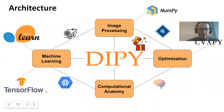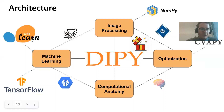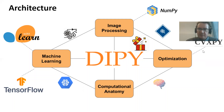Here is the architecture of the software in the grand picture. DiPy has an image processing site and a signal processing site that uses NumPy arrays. Then it has a computational anatomy site which uses our own data structures, and it has machine learning algorithms — some written from scratch in DiPy, others using algorithms from scikit-learn or TensorFlow. We also write our own optimization schemes or use libraries such as CVXPy to drive some of the optimization and modeling problems.